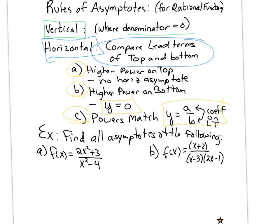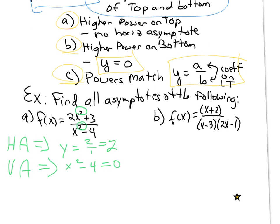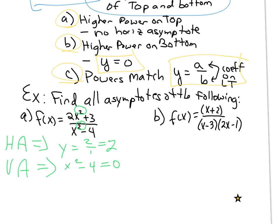If we do Part A, you will notice that the power on top and the power on the bottom is the same. So, for our horizontal asymptotes, it's going to be Y equals the coefficient on top over the coefficient on the bottom, or two. For our vertical asymptotes, we're just going to take the bottom and set it equal to zero, and we're going to solve. So, for this particular case, it would be X plus two times X minus two equals zero. So, we end up having two vertical asymptotes where X equals negative two or X equals positive two.